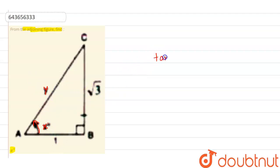So from here we can write tan of x degree equals perpendicular over base, that is square root of 3 by 1.